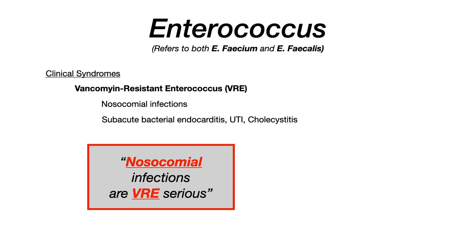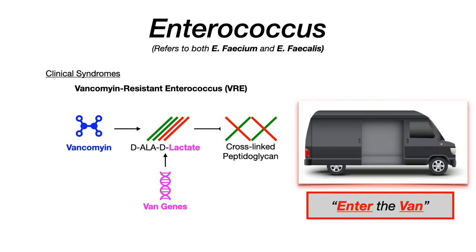Two mnemonics: first, 'enter the VAN' — imagine a van with its door open, 'enter' for enterococcus and 'VAN' for the VAN gene — reminding you that the VAN gene is the mechanism by which VRE virulence is conferred. Second: 'nosocomial infections are very serious — very VRE' to connect nosocomial infections with vancomycin-resistant enterococcus.